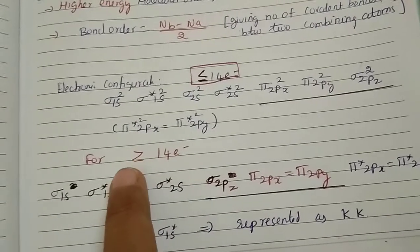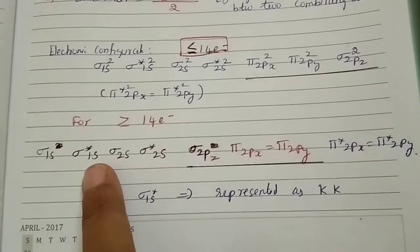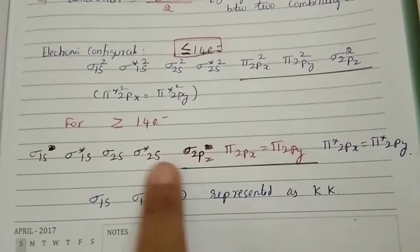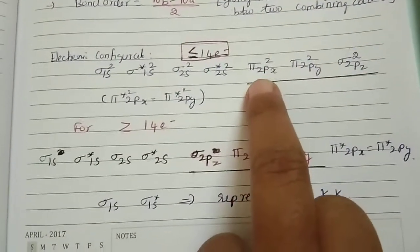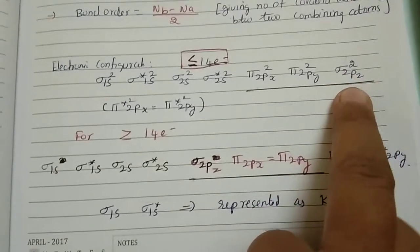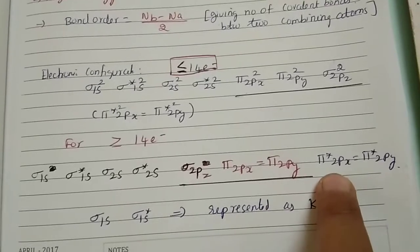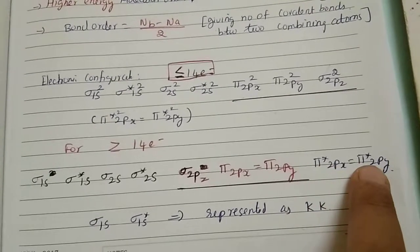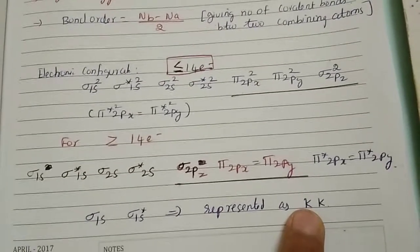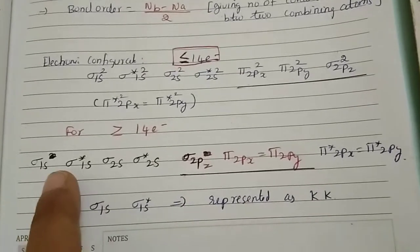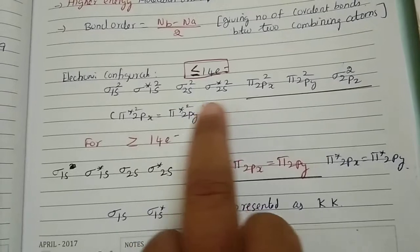If the atom has more than 14 electrons, the electronic configuration changes. The order becomes: σ1s, σ*1s, σ2s, σ*2s, σ2pz, π2px, π2py, π*2px, π*2py, σ*2pz. The difference is that for less than or equal to 14 electrons, π2px and π2py come before σ2pz, but for more than 14 electrons, σ2pz comes first. You may represent σ1s and σ*1s as 'KK' for convenience.